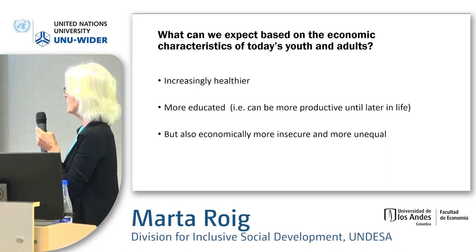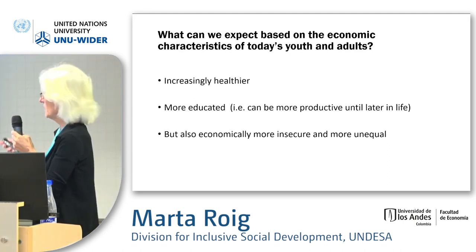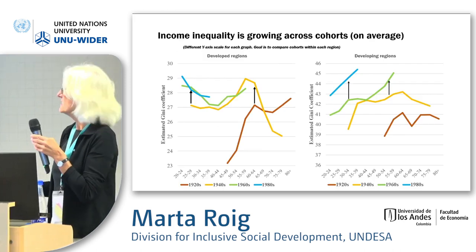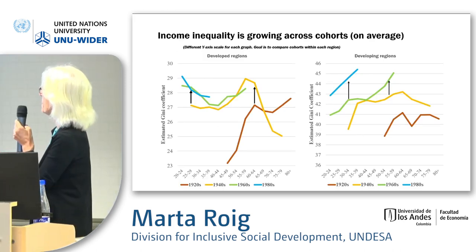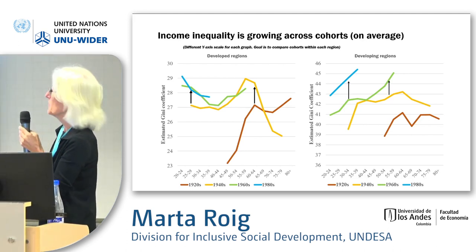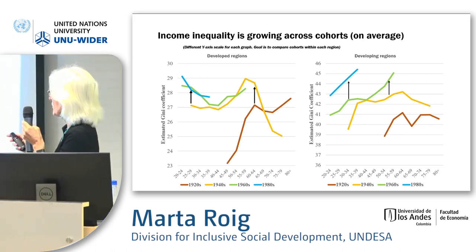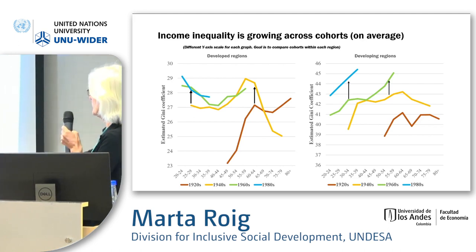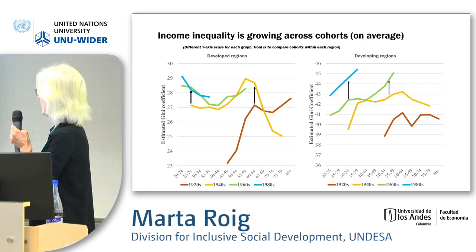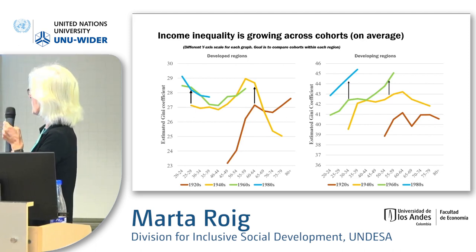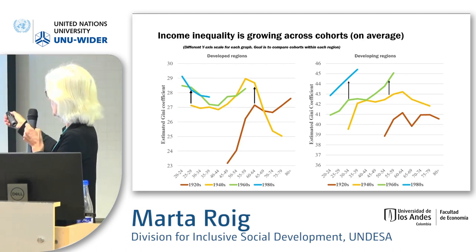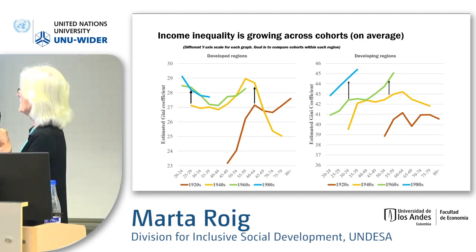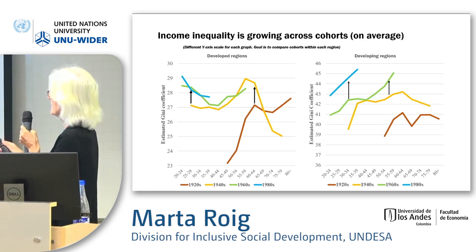At the same time, they are also economically more unequal and in some cases more economically insecure. This graph shows income inequality measured by the Gini coefficient across successive birth cohorts by age. The birth cohorts we can examine range from those born in the 1920s — shown in the orange line — to those born in the 1980s, shown in the blue line. In developing countries, at any given age, there is an increase in inequality measured by the Gini coefficient from one cohort to the next. In developed countries too, with exceptions.